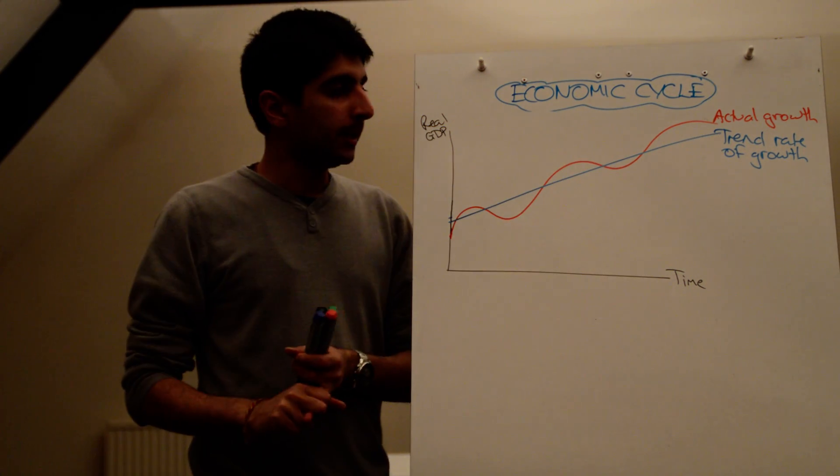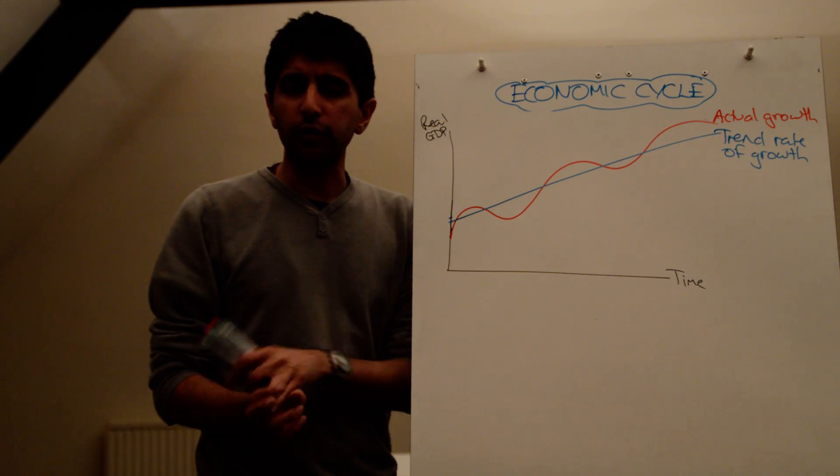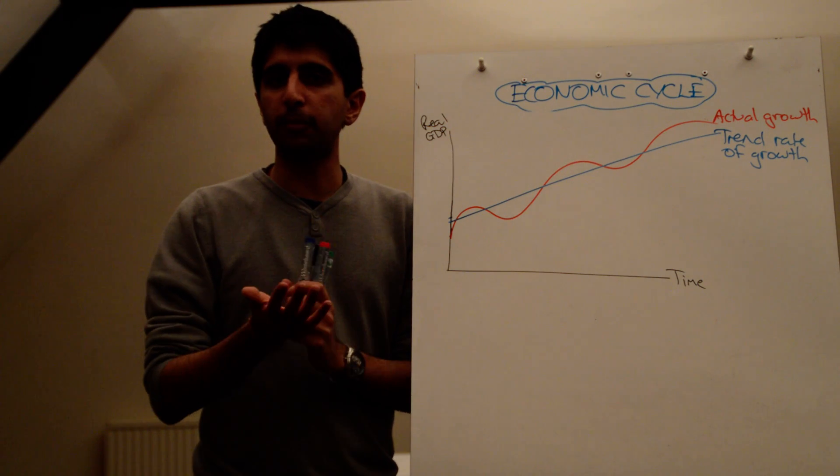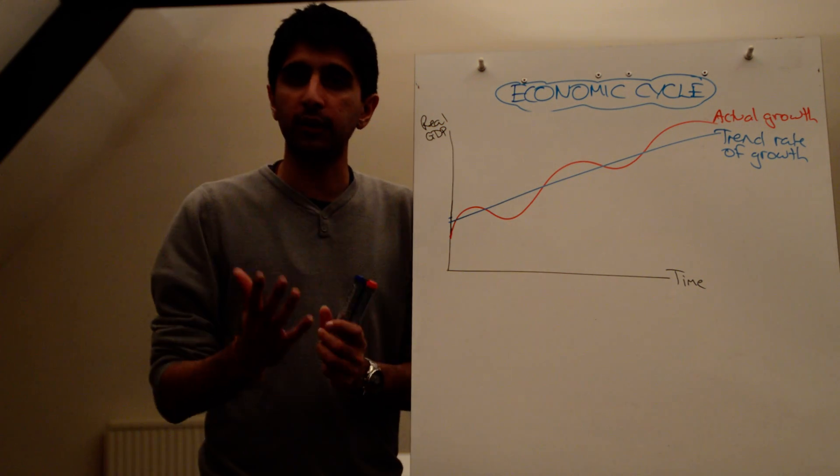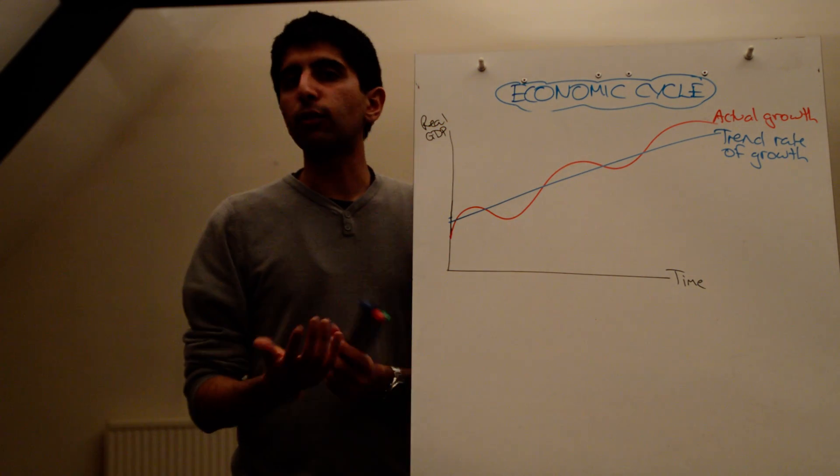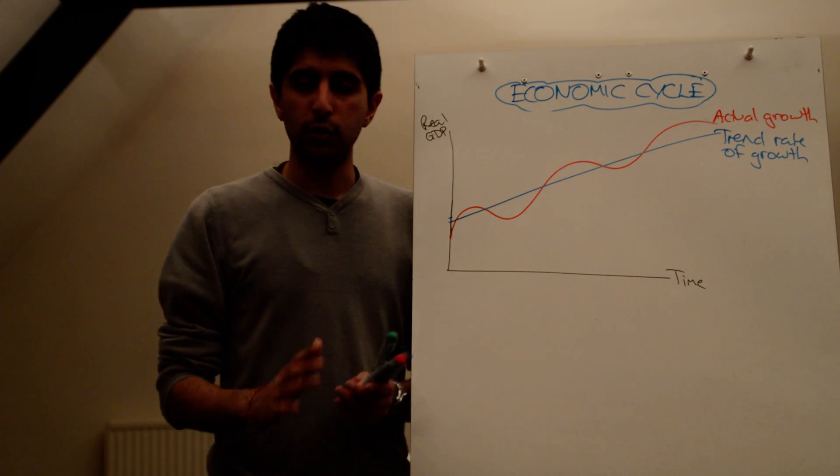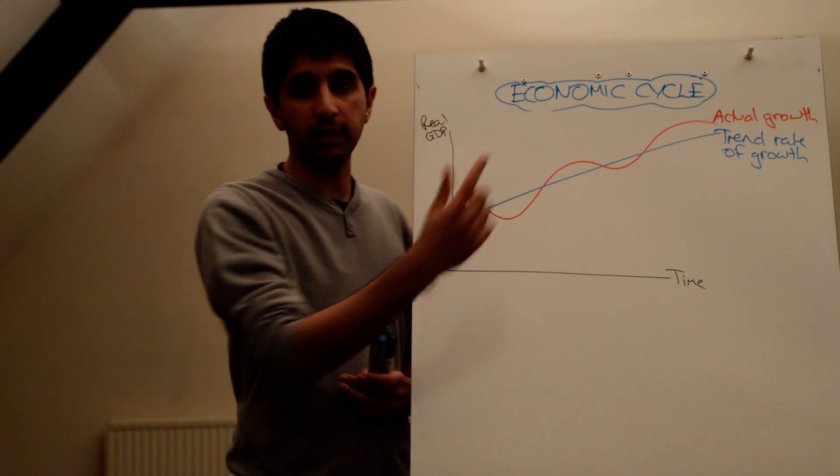At the same time, it might be supply-side shocks. So maybe it's a sudden increase in the price of oil, which then increases the cost of production, which reduces economic growth. Supply-side shock. Maybe it's an increase in the price of commodities, an increase in the price of raw materials. A sudden shock which people aren't expecting, which then causes a reduction in growth.